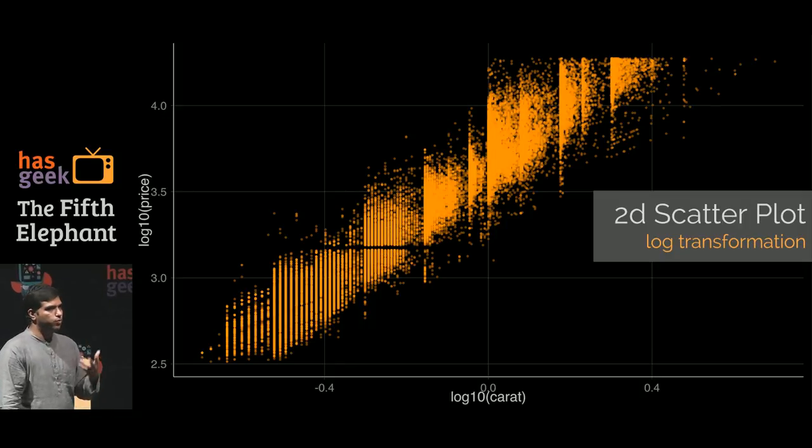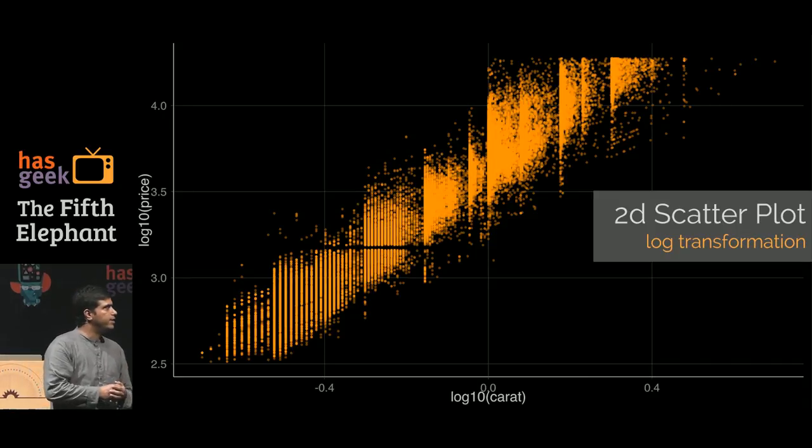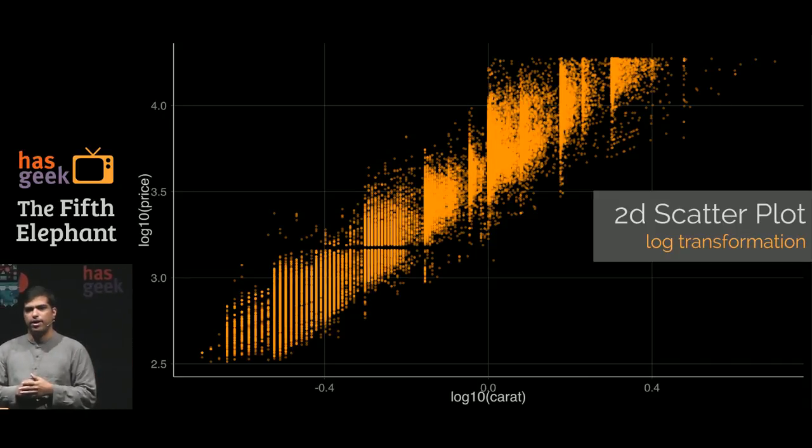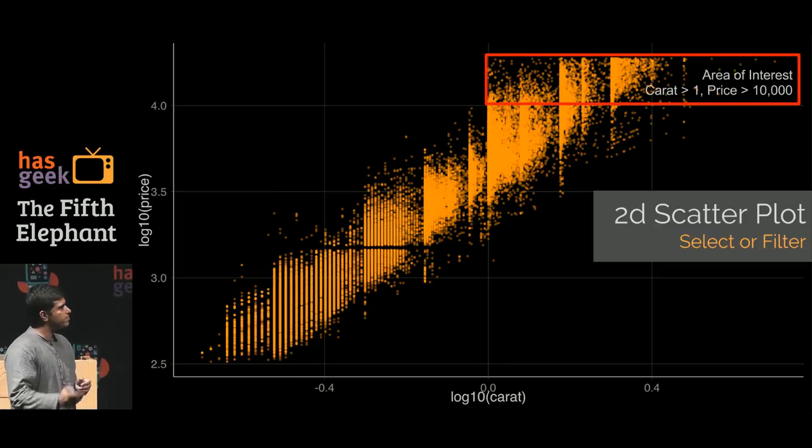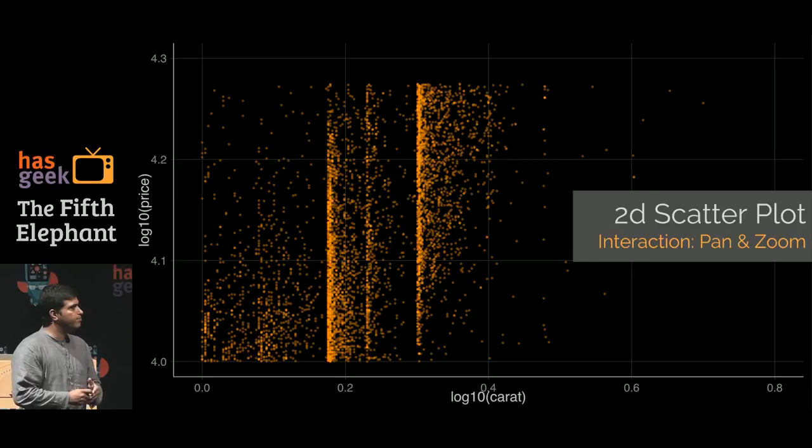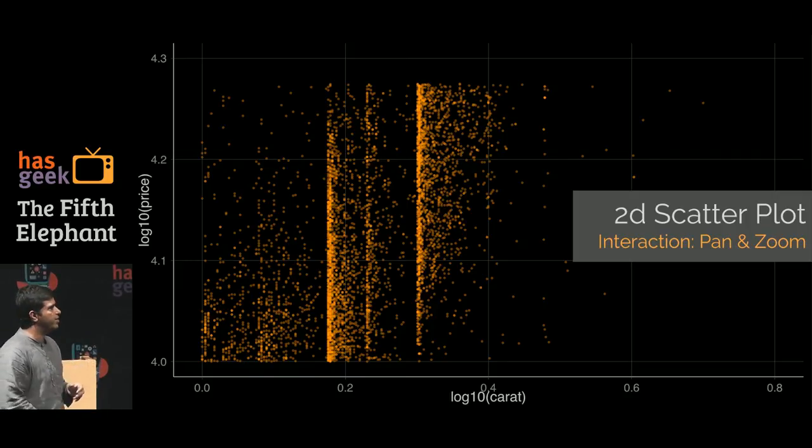You can do what many of you would do, do a log transform, log of the price and log of the carat, and now you can clearly see the chart looks linear. There is definitely a good linear relationship between log carat and log price, it makes intuitive sense, heavier the diamond, more the price. The other thing you may want to do in interaction is zoom into an area. You would say I want to look at carat greater than one, price greater than 10,000, can I have the ability to zoom into this? Panning and zooming is one of the other abilities you want in your interaction system so you can actually visualize multidimensional data, because you want to look at different areas of interest. You zoom into that area and then start to further examine that.